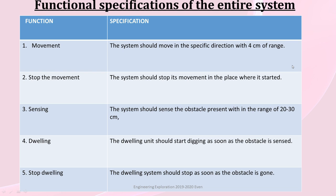Next is functional specifications of the entire system. First function: movement. Its specification, the system should move in a specific direction with 4 cm of range. Next is stop the movement. The system should stop its movement in the place where it started. Next is sensing. The system should sense the obstacle present within the range of 20 to 30 cm. Fourth, dwelling. The dwelling unit should start digging as soon as the obstacle is sensed. Fifth, stop dwelling. The dwelling system should stop as soon as the obstacle is clear.